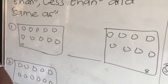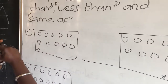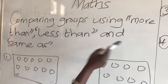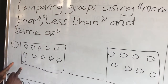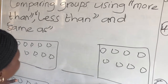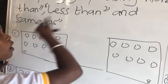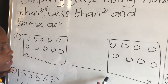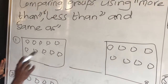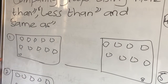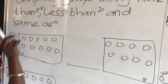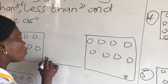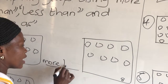And our topic says compare using more than, less than, and same as. We have 10 and 8. Can we say 10 is less than 8? No. We say 10 is more than 8. So you write: more than.